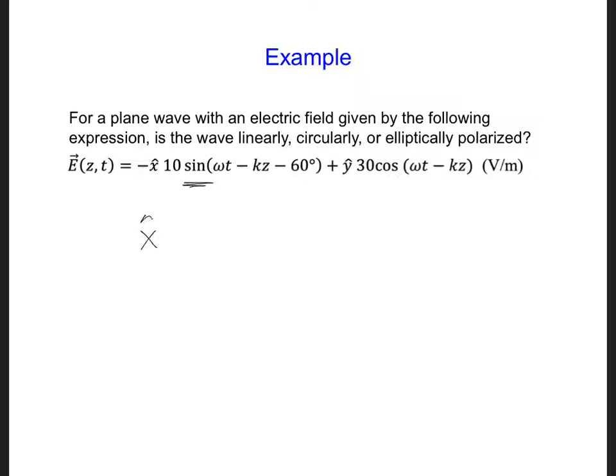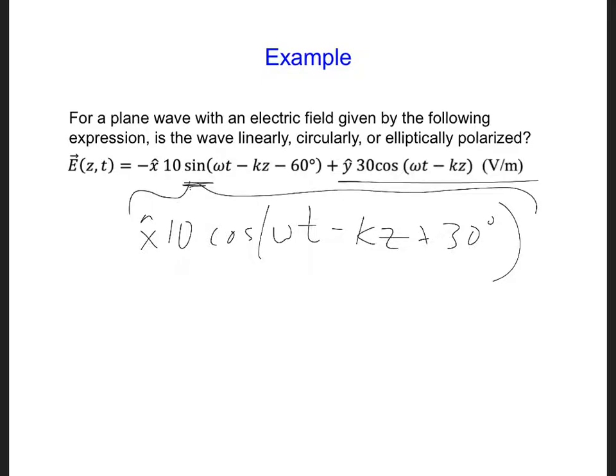we'll have x̂ 10 cosine(ωt - kz + 30°). So we have that for this first term. And we still, of course, have the second term as well.